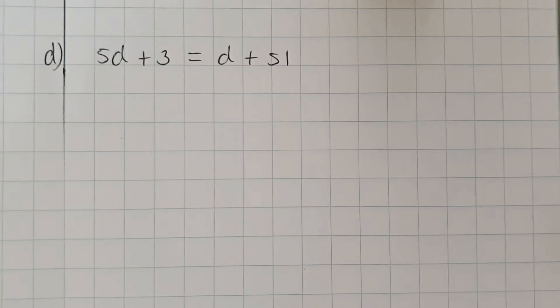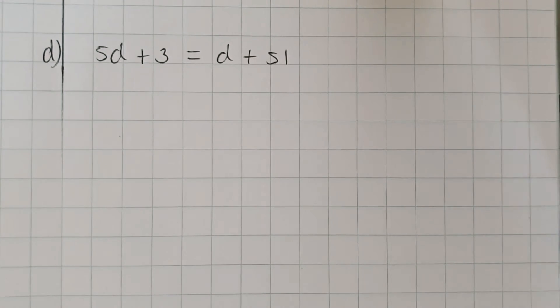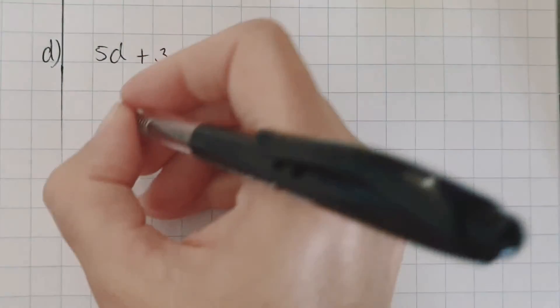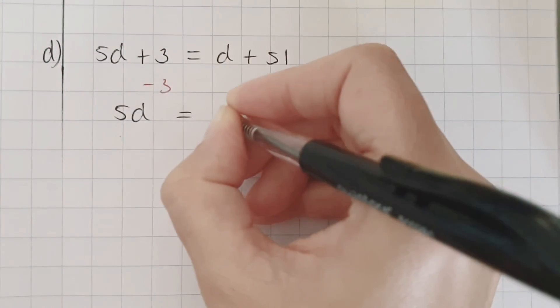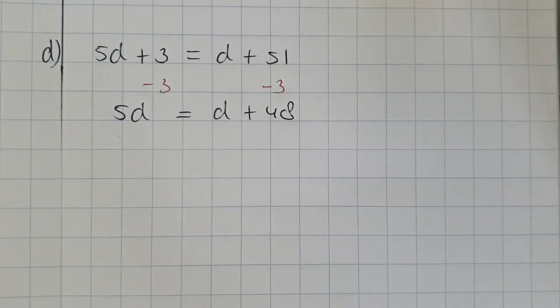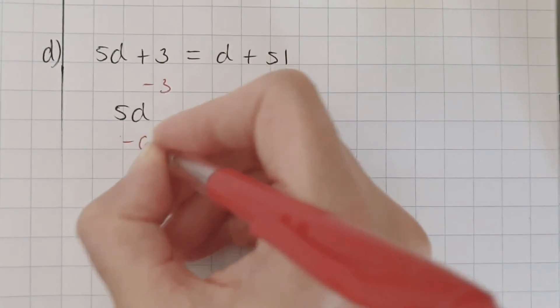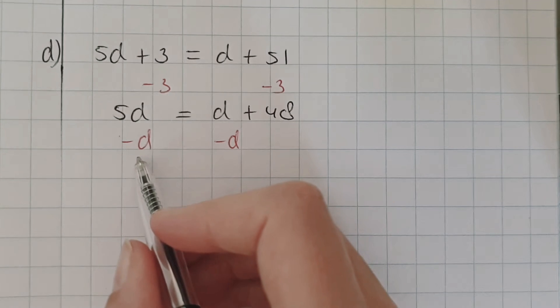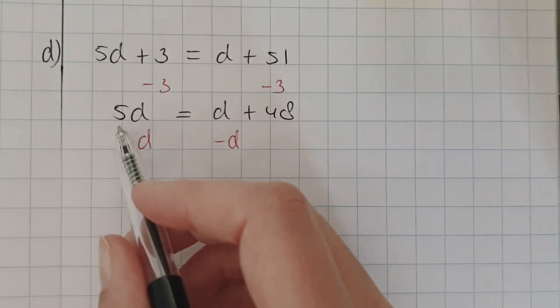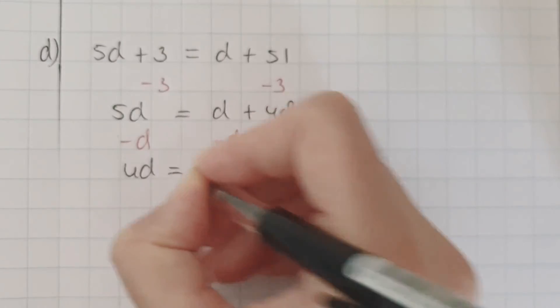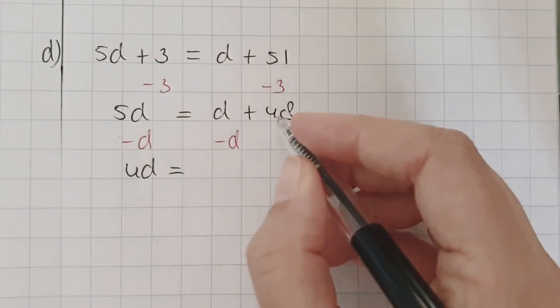D. 5d plus 3 equals d plus 51. First minus 3 on both sides. This is d plus 48. And then I'm going to do minus d on both sides. So minus d means minus 1d, of course. So 5 minus 1d. So that's 4d. And then this is gone, so it's 48.